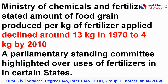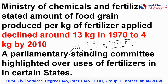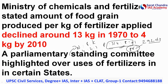A parliamentary standing committee highlighted that in some states there is overuse of fertilizers. For example, the standard ratio of nitrogen, phosphorus, and potassium in India should be 4:2:1. However, in states like Punjab it is 31.4:8:0.1, which is very high. The parliamentary standing committee also highlighted that 85% of chemicals and fertilizers in India are utilized only in 292 districts, which is highly impacting soil fertility.